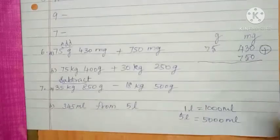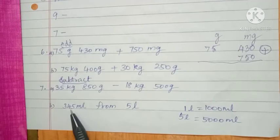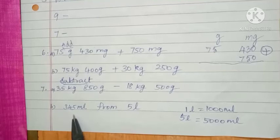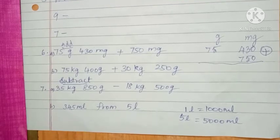You get 5000 milliliters, subtract from 345. So 5000 is a bigger number, write down for 345, then you find out the answer.